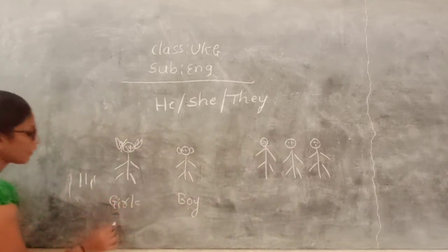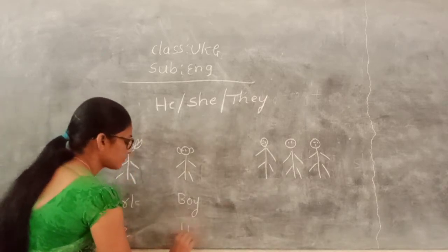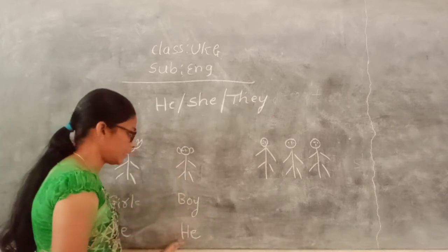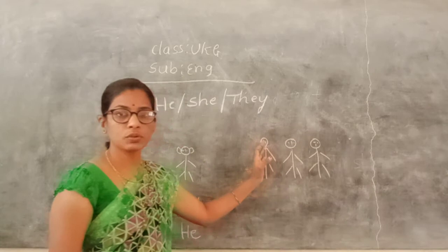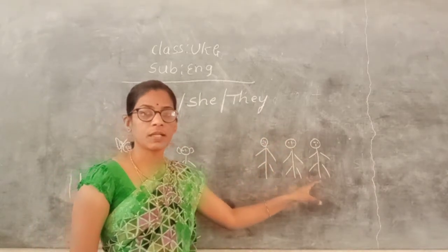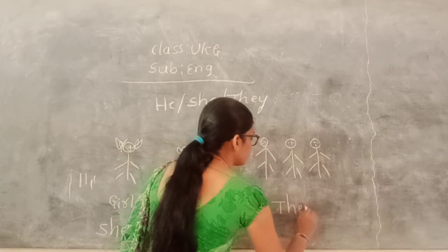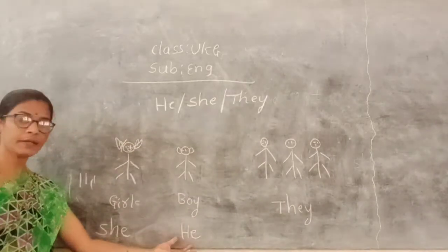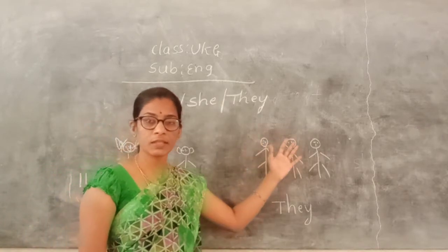Here, girl - we use she. See. And boy - we use he. See, girl - she. Boy - he. And more than once, girl or boy together, more than once. She is. She is. He is.